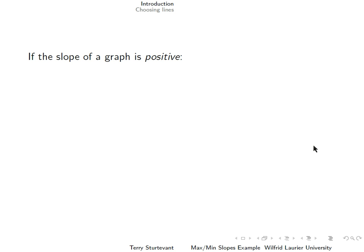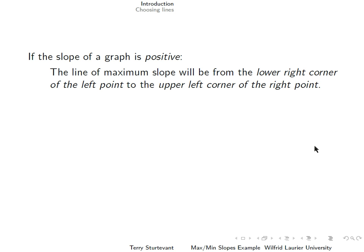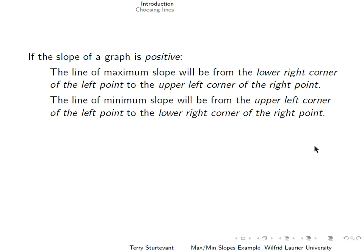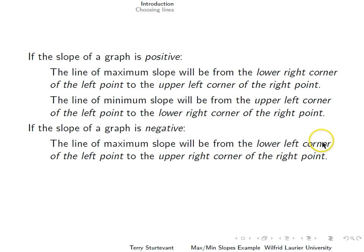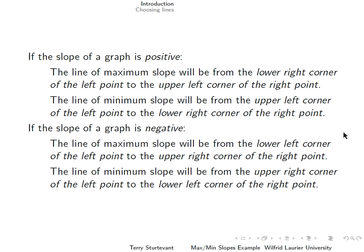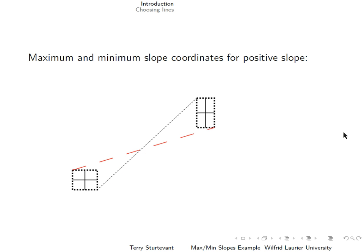If the slope of the graph is positive, then the line of maximum slope will be from the lower right corner of the left point to the upper left corner of the right point. If the slope of a graph is negative, then the line of maximum slope will be from the lower left corner of the left point to the upper right corner of the right point. And the line of minimum slope will be from the upper right corner of the left point to the lower left corner of the right point. That sounds pretty confusing, but here it's easy to see it graphically.